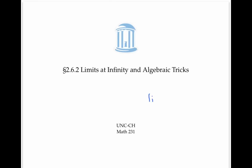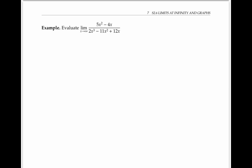In this video, we'll evaluate limits at infinity using algebraic techniques. Let's find the limit as x goes to infinity of five x squared minus four x divided by two x cubed minus eleven x squared plus twelve x.